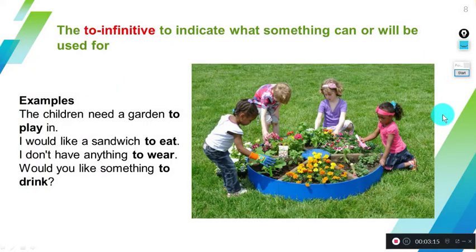Now we have the to-infinitive to indicate what something can or will be used for. We're going to use the to-infinitive to indicate how something will be used, what its purpose is. For example: The children need a garden to play in. I would like a sandwich to eat. I don't have anything to wear. Would you like something to drink? The to-infinitive will indicate how we're going to use something or what its purpose is.